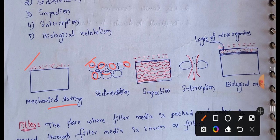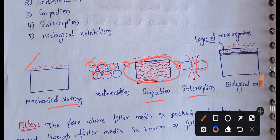The grains of filter media capture suspended particles through sedimentation. Particles settle onto the grains and are retained. This is followed by impaction and interception, where particles are captured by the grains as water flows through the filter bed.